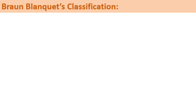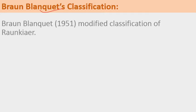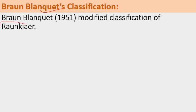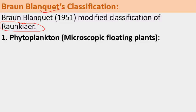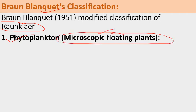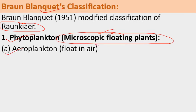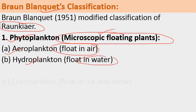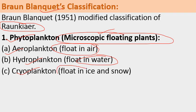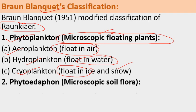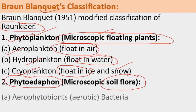The next classification was given by Braun-Blanquet in 1951, who modified Raunkiaer's classification of life forms. His system is slightly different from Raunkiaer's. Braun-Blanquet divided plants into various categories: Phytoplanktons are microscopic free-floating plants that move with the water current. Sub-categories include Aeroplanktons (float in air), Hydroplanktons (float on water bodies), and Cryoplanktons (grow on ice or snow).